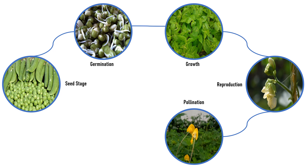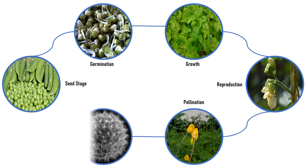Last but not the least, after pollination, fertilization takes place and seed formation takes place. But since plants cannot move, their seeds can move, and seed dispersal ensures their spreading and their continuity. That particular stage is the very important last stage in the life cycle of the plant, and it is called spreading seeds.